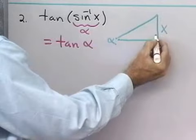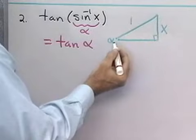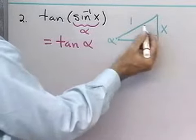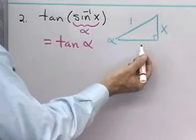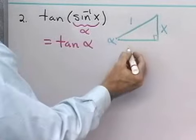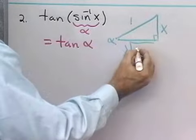Well, if I label this side with x, let's just make that the right angle. If this is x and this is 1, then the sine of alpha is x over 1, which is just x. So, alpha is the inverse sine of x. So, if this is x and this is 1, this side by the Pythagorean theorem is going to be 1 squared minus x squared.